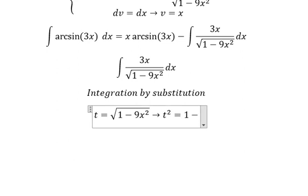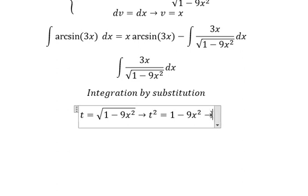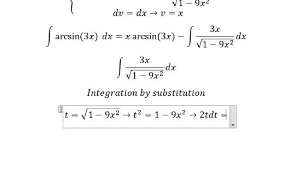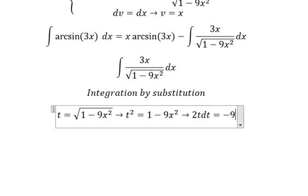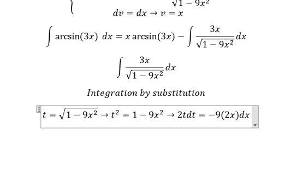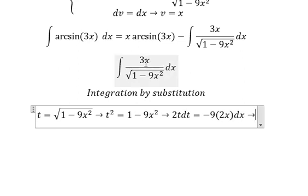Later we need to differentiate both sides. This gives us 2t dt. This one, the constant, gives us zero. This one gives us negative 18x dx because we have number nine and number two and negative. So we need to divide both sides by negative 18.